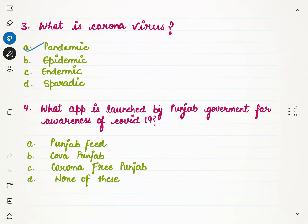The next question is: what app was launched by the Punjab government for awareness of COVID-19? Its name is Kova Punjab. The full form of Kova Punjab is Coronavirus Alert. Punjab's Chief Minister is Captain Amarinder Singh and the Governor is VP Singh Badnore — for your extra information.